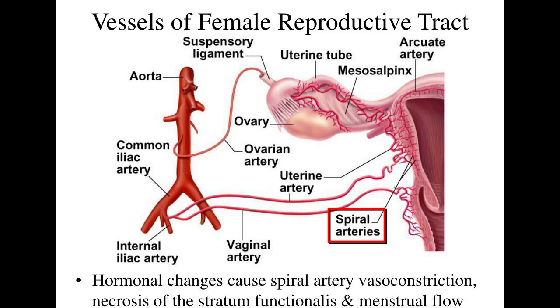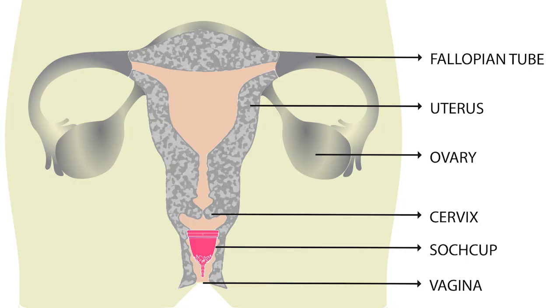The external sex organs are also known as the genitals, and these are the organs of the vulva including the labia, clitoris, and vaginal opening.